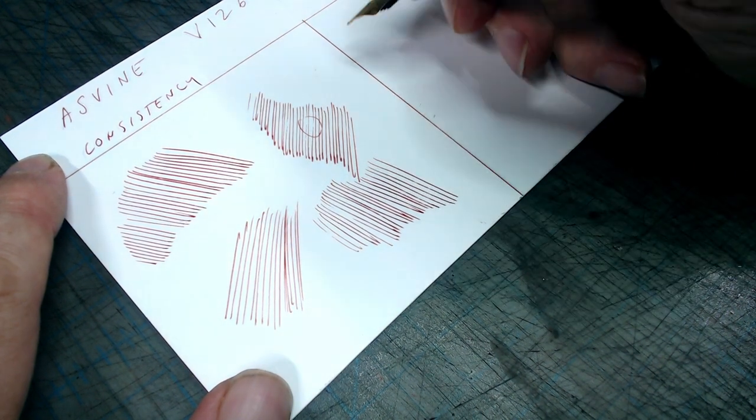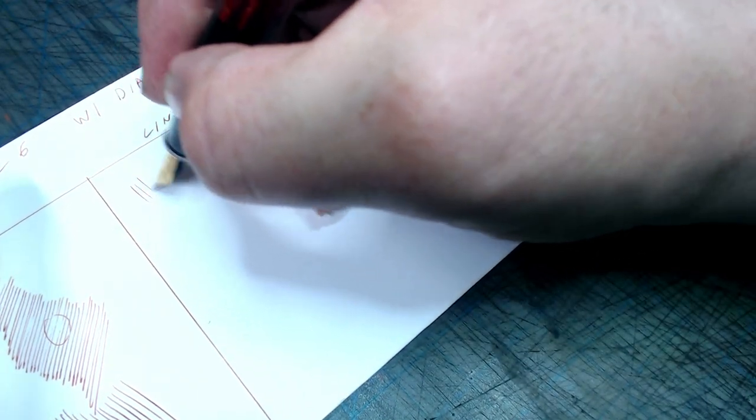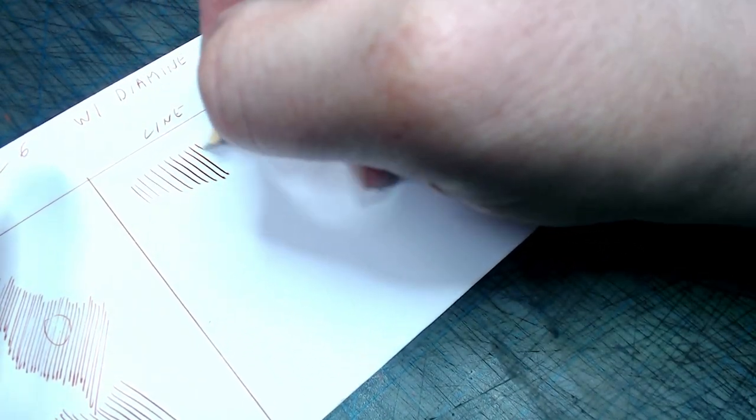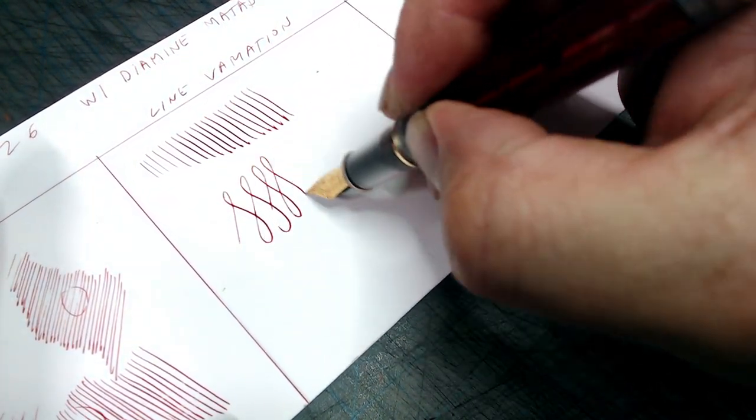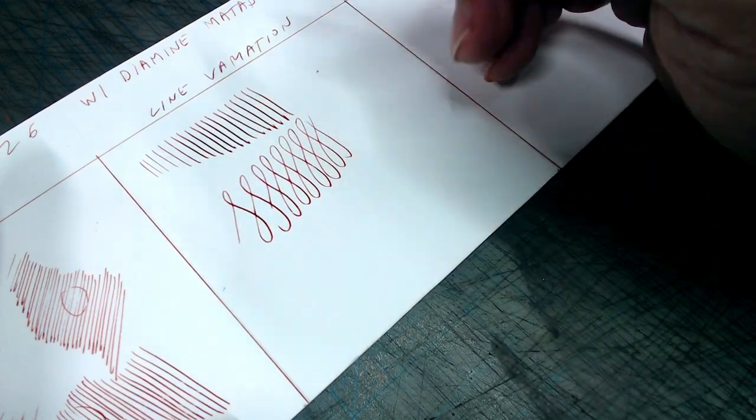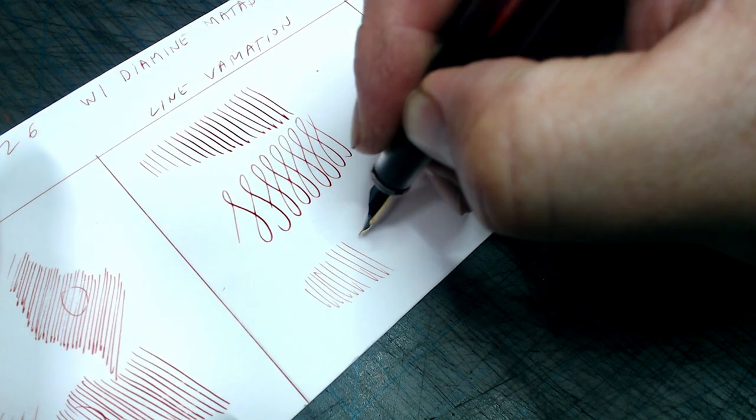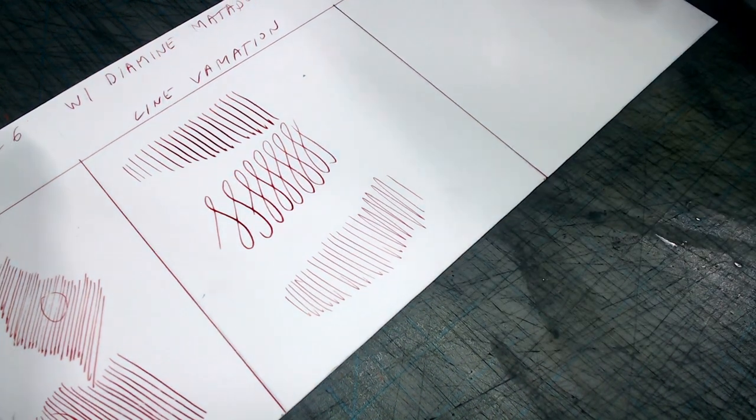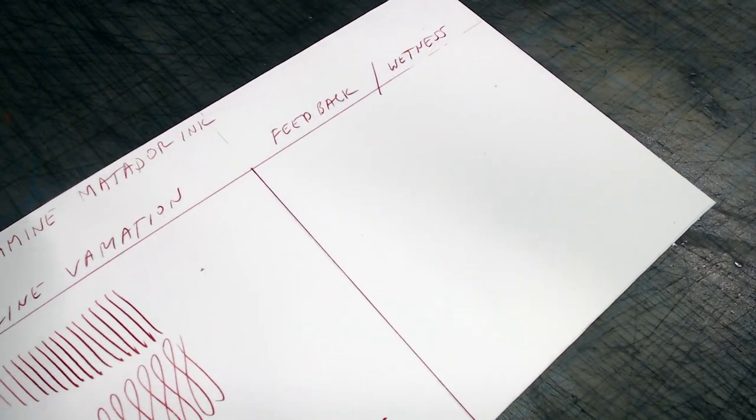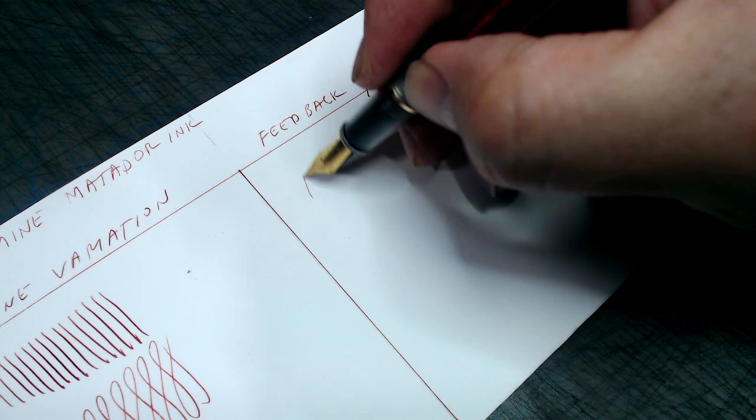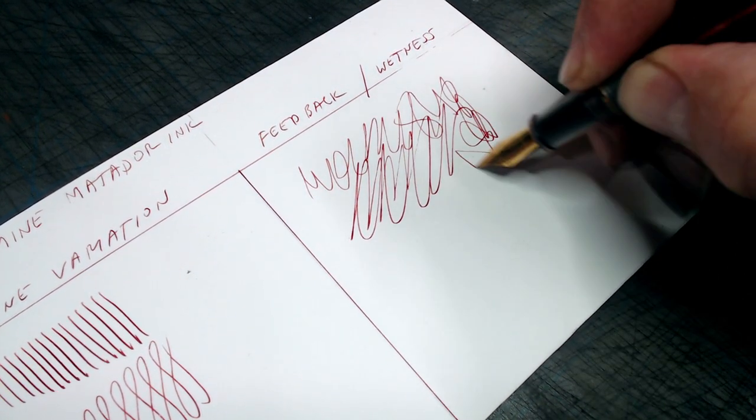In the line variation department, it's very stiff, perhaps even stiffer than the Moonman, if such a thing is possible, ranking at .25 on my 1-10 scale. However, in reverse writing, it's not reliable, sometimes putting down an extra extra extra fine line, and sometimes drying up. In the feedback test, this pen performed pretty well, given the fineness of the nib. I prefer less feedback on my nibs, and there was definitely some scratchiness on this one, even on very smooth paper. However, I think a few passes on a micromesh can smooth this nib right out, and make it right to my liking.